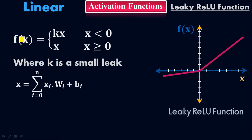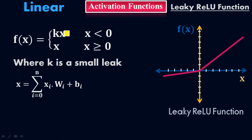Looking at the equation, f(x) will be kx when x is less than 0. If the input passed to the neural network is negative, f(x) will be kx, where k is the small leak. The leakage is only on the negative side, not the positive side. For positive values, f(x) will be x when x is greater than or equal to 0, meaning positive values from 0 up to positive infinity.